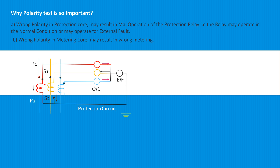Even in normal condition, when currents are balanced, the summation of all currents meeting at a point is zero.